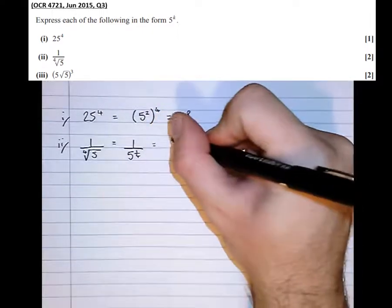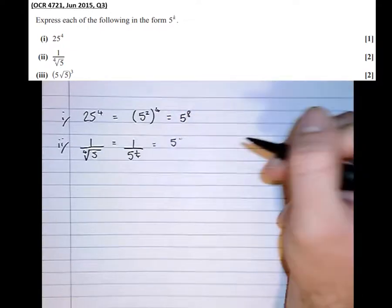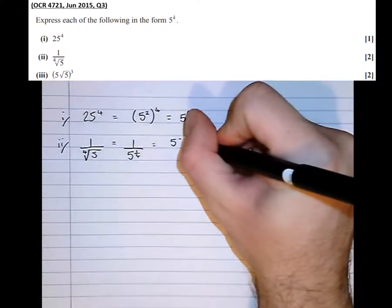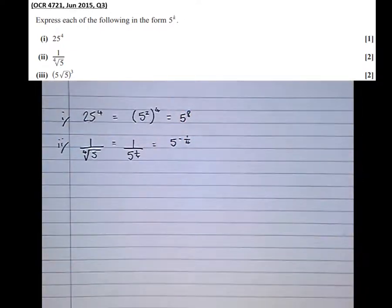Well, in powers, a negative number means reciprocal. So 5 to the power of negative 1 quarter. That's 1 over 5 to the quarter. So we've done that one.